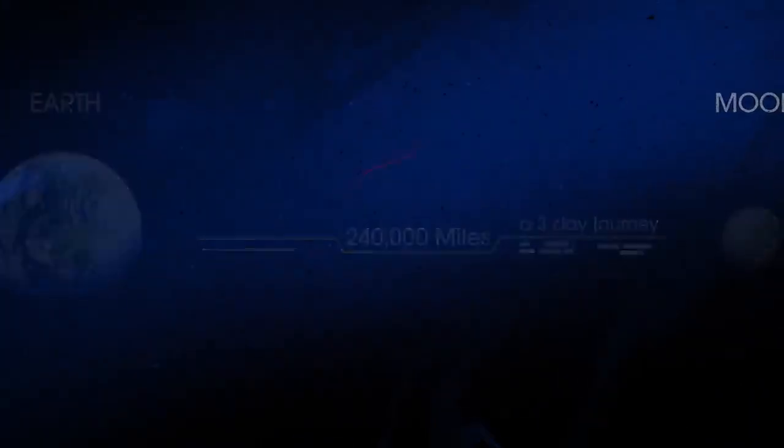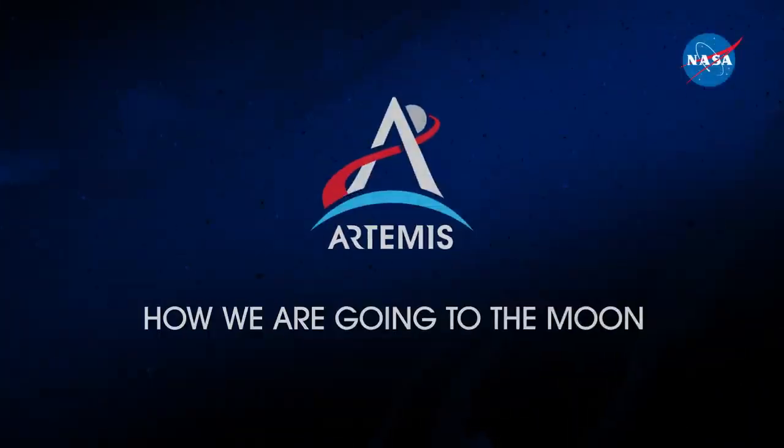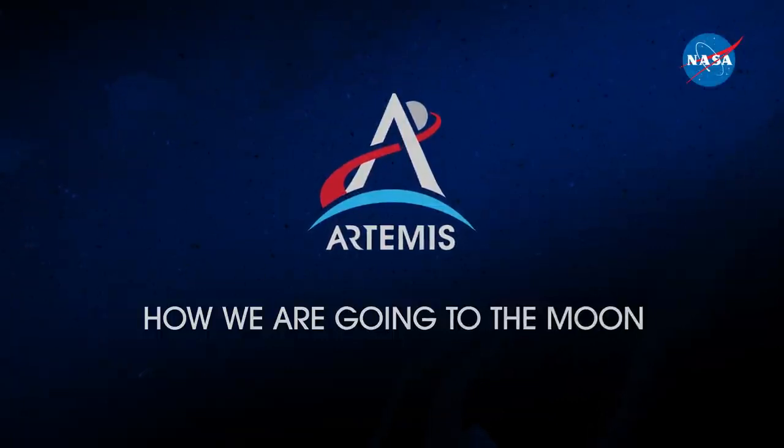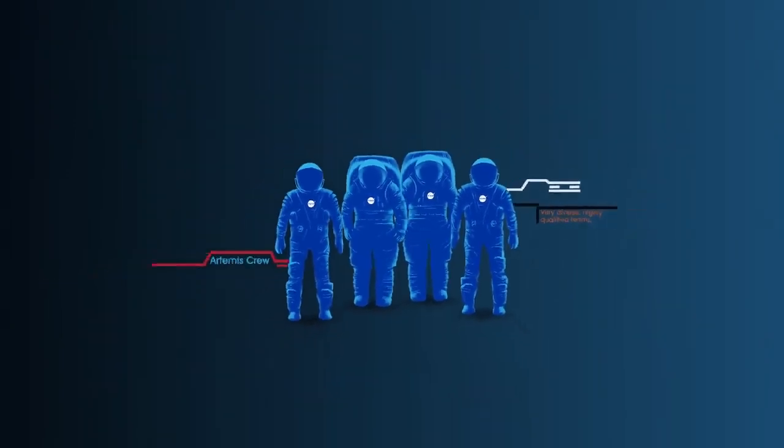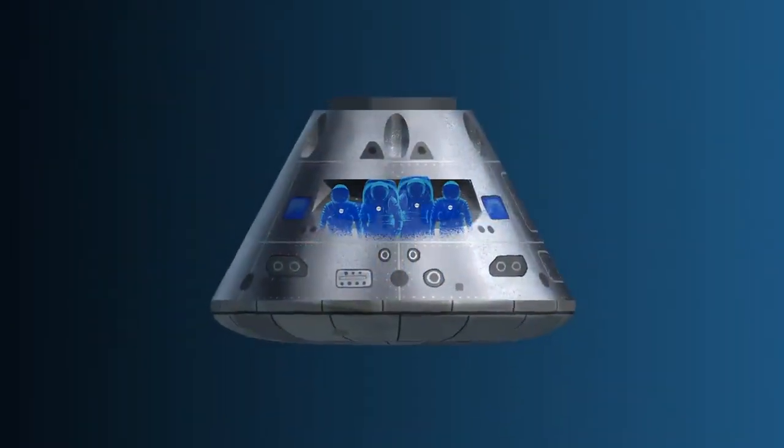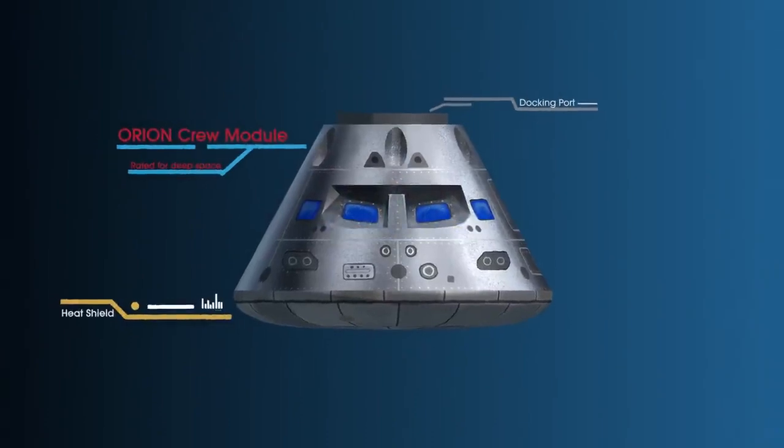So, what will an Artemis mission look like? Everything is designed and tested with our most important element in mind, the astronauts. This is their deep-space, human-rated spacecraft called Orion, built in three parts.